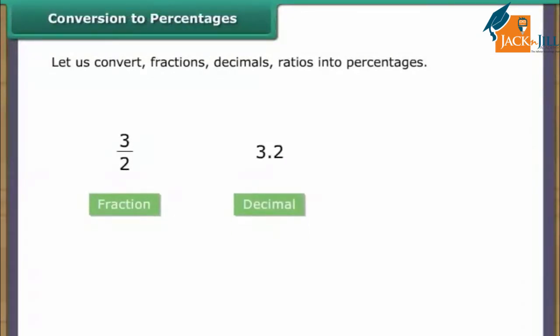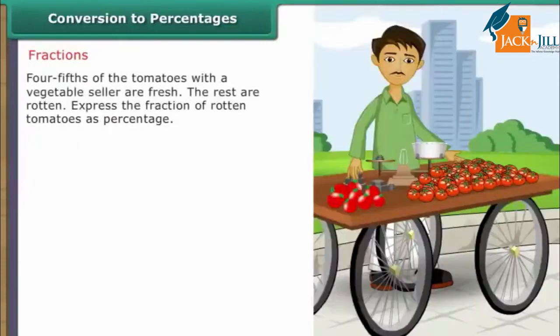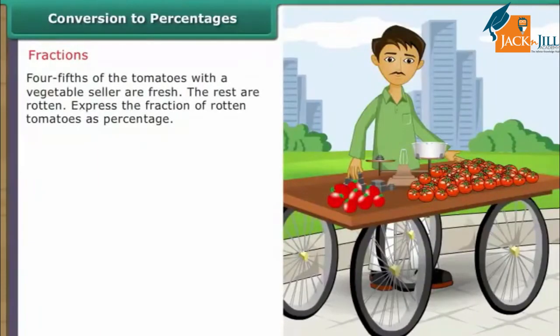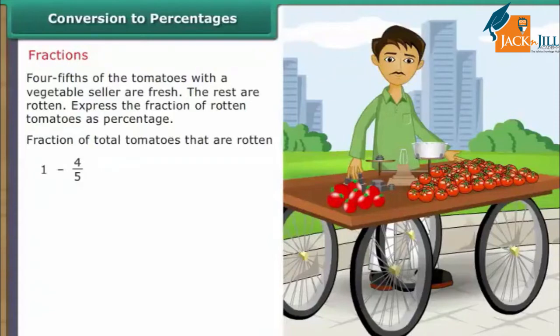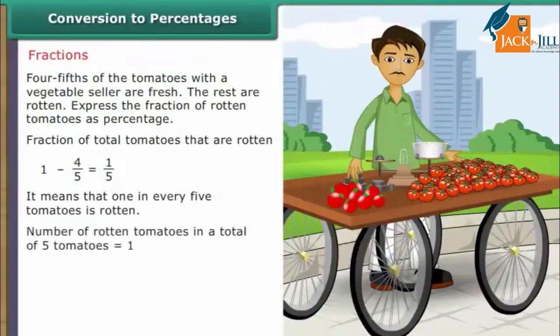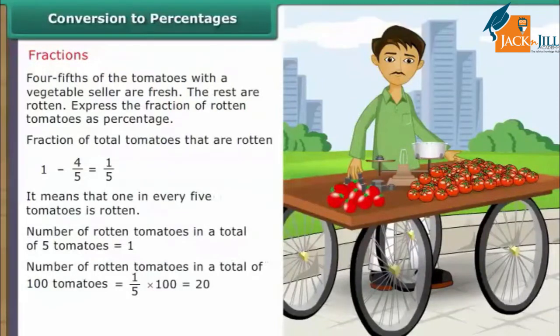Conversion to percentages. We have learned to express numbers as percentages. Let us now learn to convert fractions, decimals, and ratios into percentages. Fractions: four-fifths of the tomatoes with a vegetable cellar are fresh; the rest are rotten. Fraction of rotten tomatoes = 1 − 4/5 = 1/5. Number of rotten tomatoes in 100 is 1/5 × 100 = 20. Therefore, 20% of the total tomatoes are rotten.